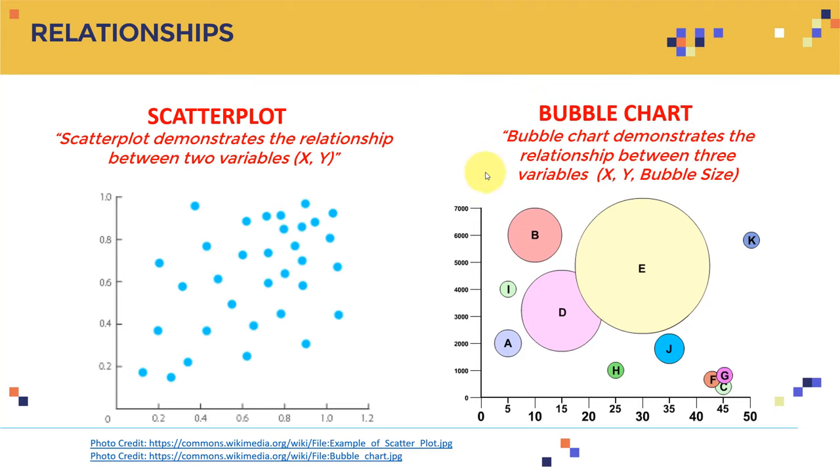I just wanted to cover it here just in case you might see on the AWS machine learning certification exam. So first, regarding relationships, there are two important types. The first one is scatter plot, which demonstrates the relationship between two variables, x and y.